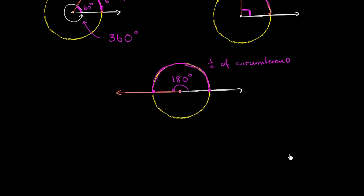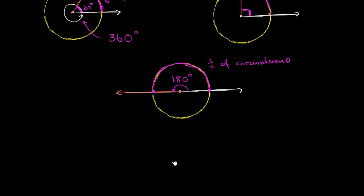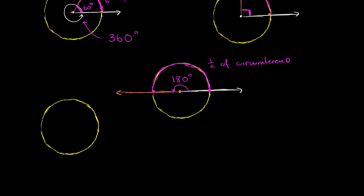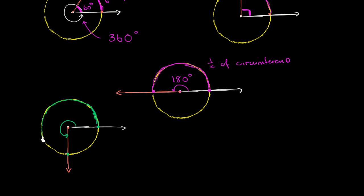Let's do one more example. Let me draw another circle and another angle. Let's say that's one ray of the angle and this is the other ray right over here. There are actually two angles formed here — there's one angle right over here, which you might recognize as a 90-degree angle. But what we really care about in this example is this larger angle right over here. Where does it intersect the circle? We care about this arc right over here, because that's the arc that corresponds to this angle.